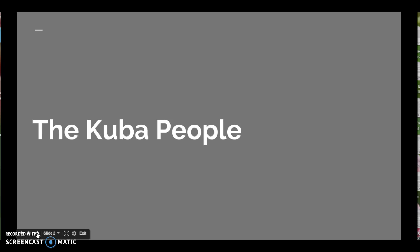Before we get into the details of the statue, let's talk a little bit about the society from which it emerged. The Kuba peoples live in the southern portion of the Democratic Republic of the Congo, on the edges of the equatorial forest. These peoples were separated into interconnected tribes, but over time they formed a powerful kingdom. The Kuba people all follow the leadership of one person, the Nyim, that's spelled N-Y-I-M.